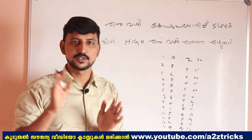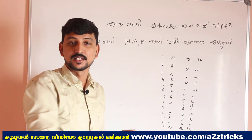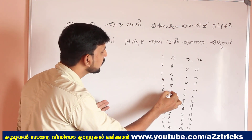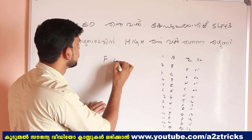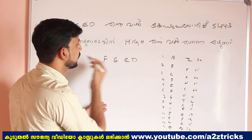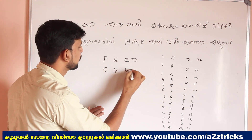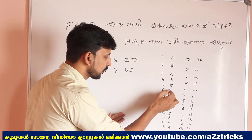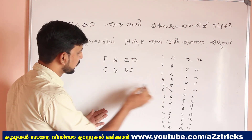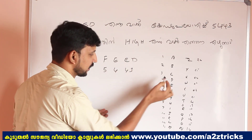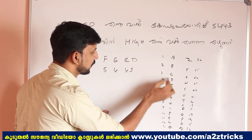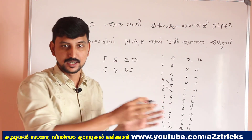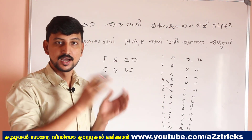If you are interested in this model, you can do it in this model. If you look at F, F is 5. Going through: 4, 4, 3 — F is 5, E is 4, D.